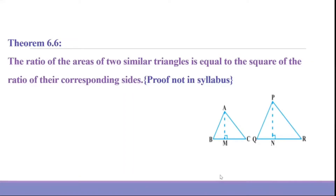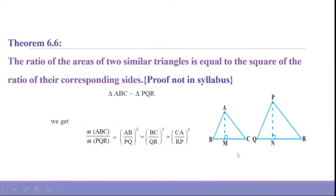So just understand the result. In case triangle ABC is given similar to triangle PQR, then the ratio of the areas of triangle ABC to area of PQR will be equal to the square of the ratio of the corresponding sides — that means AB upon PQ squared. It can also be equal to BC upon QR squared, or AC upon PR squared. The proof is not required, but the statement is important because it is used in many questions.